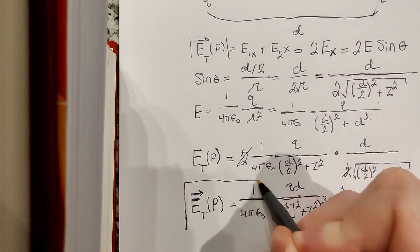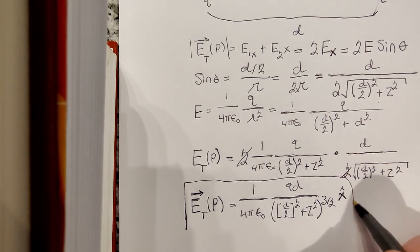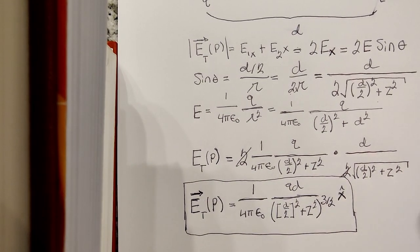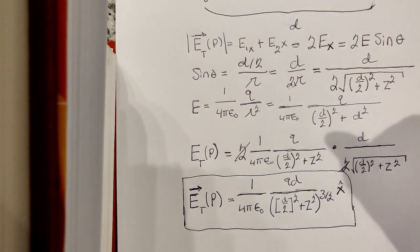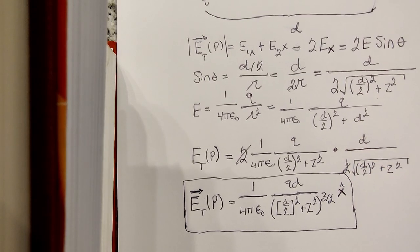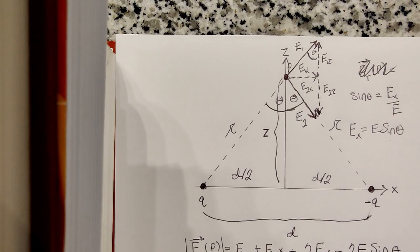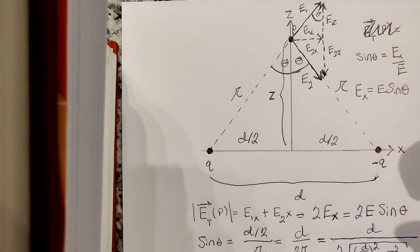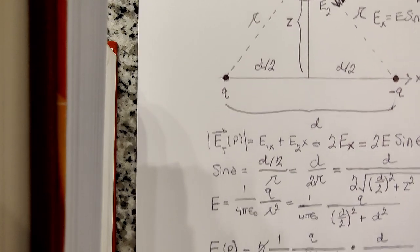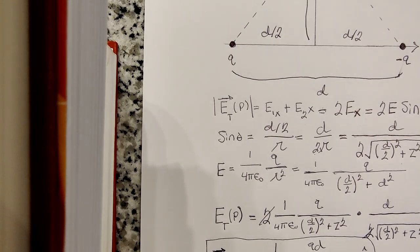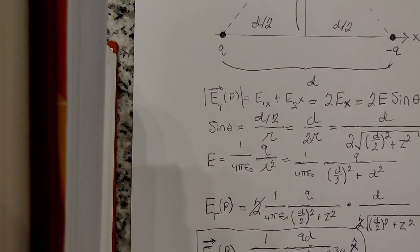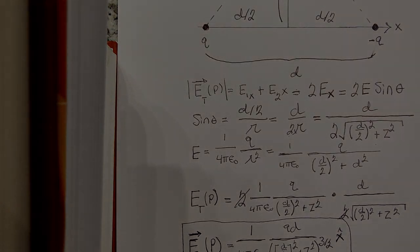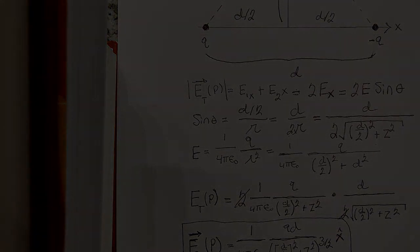And this is our answer: 1 over 4 pi epsilon naught Q times d over this quantity to the 3 halves in the x hat direction. All right, thank you guys very much for watching. I hope this made sense. If you have any questions let me know in the comments below. And yeah, be sure to subscribe for more videos coming in the future. And I'll see you guys in problem 2.3. Bye.